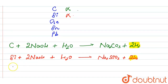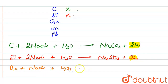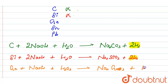Now when germanium reacts with NaOH in the presence of H₂O₂ (hydrogen peroxide), a compound forms. This reaction does not evolve hydrogen gas — it gives water instead.